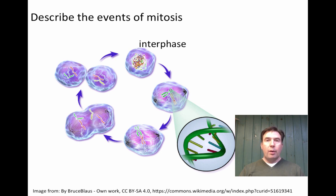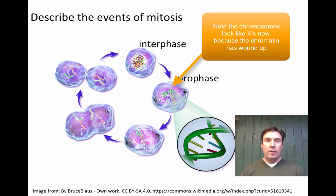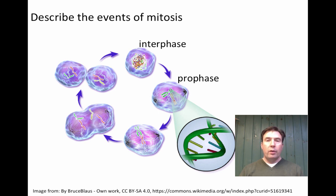Let's go through M phase and the events of mitosis. The cell will be in interphase before entering mitosis, which starts with prophase. In prophase, the nuclear envelope breaks down, chromosomes form as the chromatin winds up and condenses, and — in animal cells — spindle fibers form from the centrioles. The cell is assembling all the parts necessary to pull the genetic material apart.